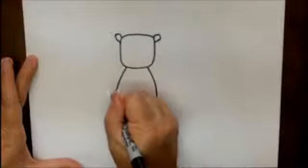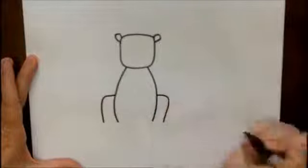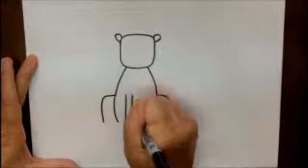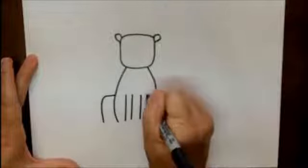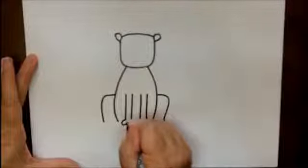And then coming out or towards the bottom of the body, we're going to make some boxy letter J's that are upside down coming out of the back for his back legs. For his front legs, we're going to make some straight lines and attach to the bottom of those legs. We can make some toes.